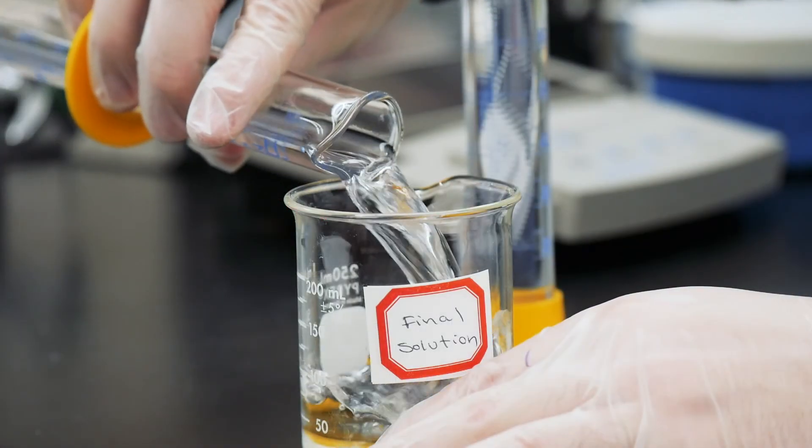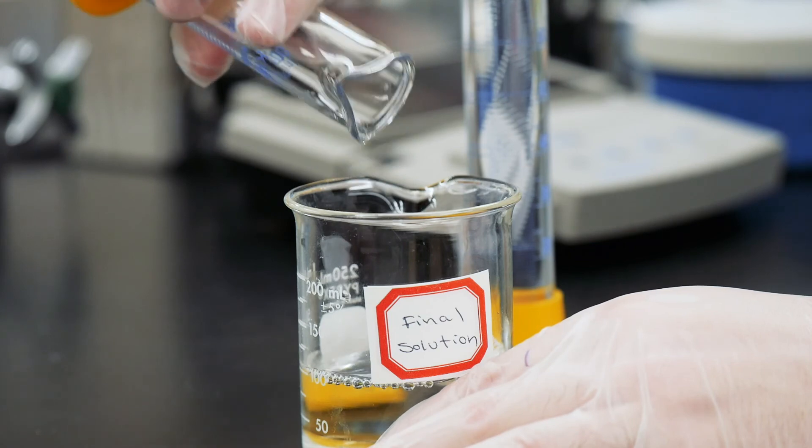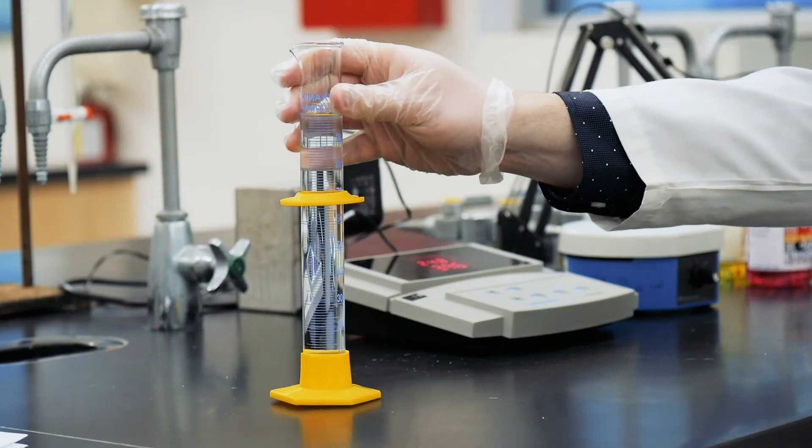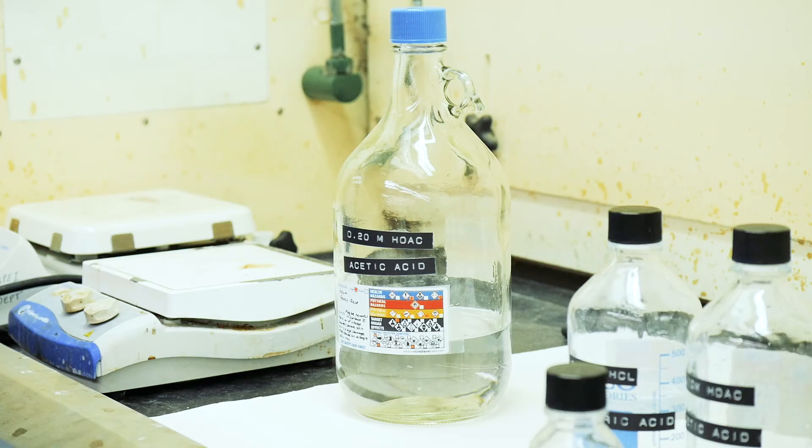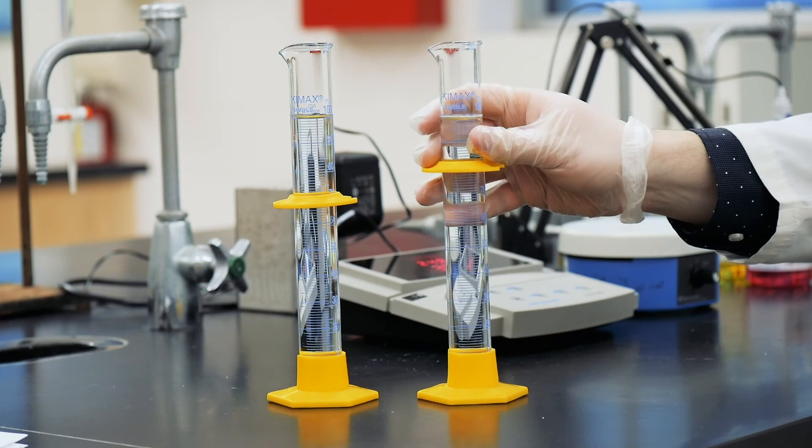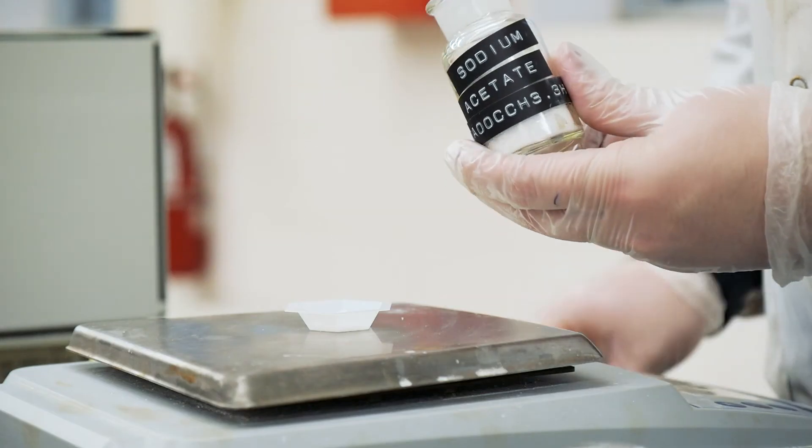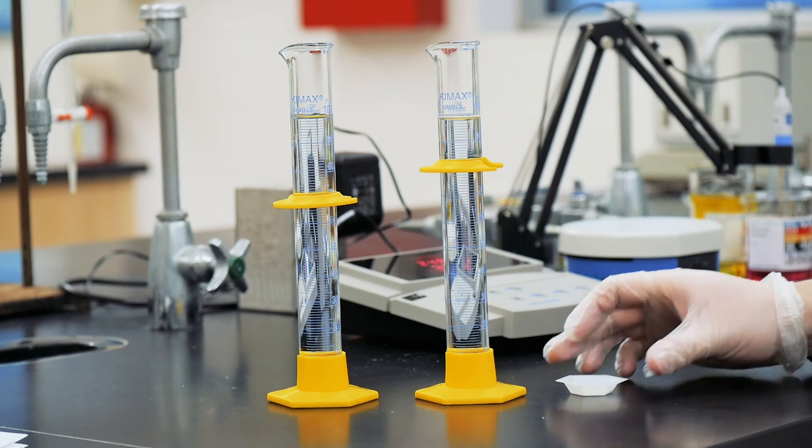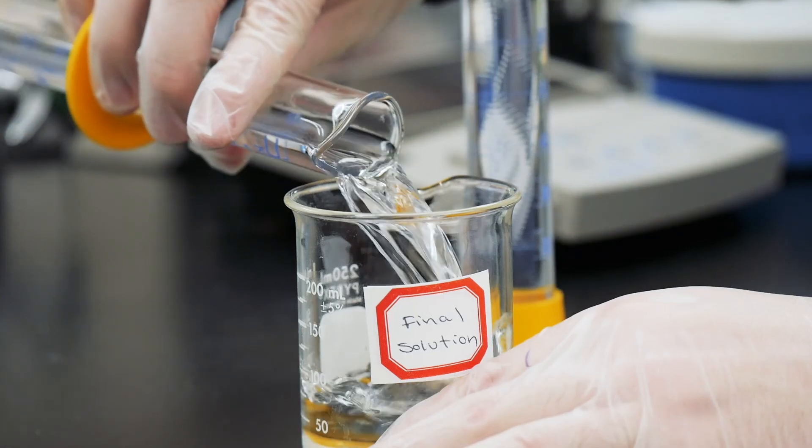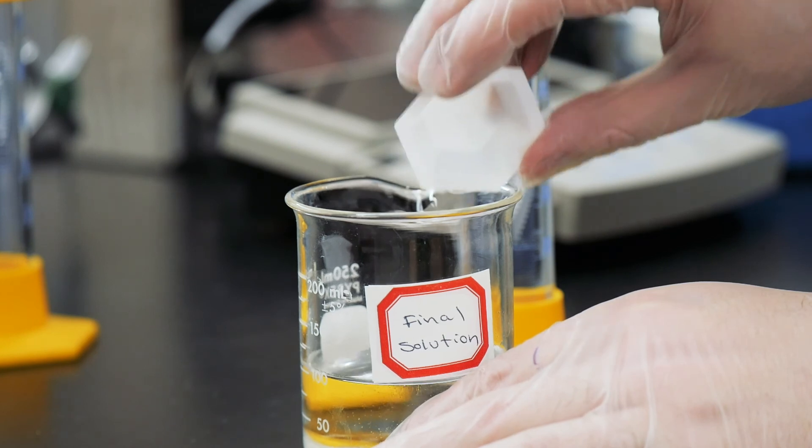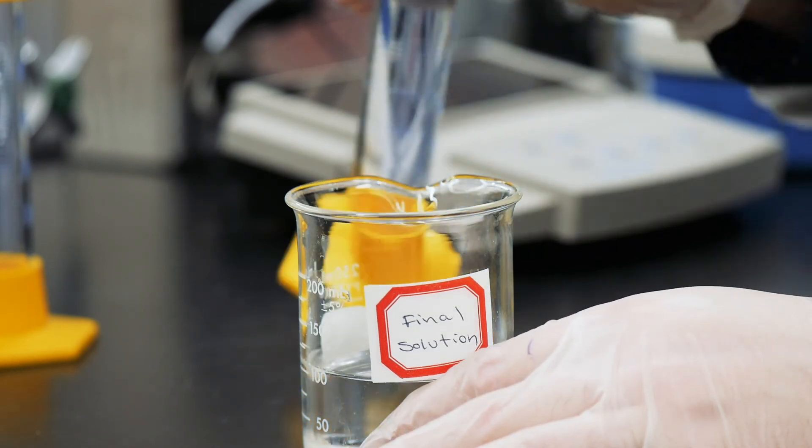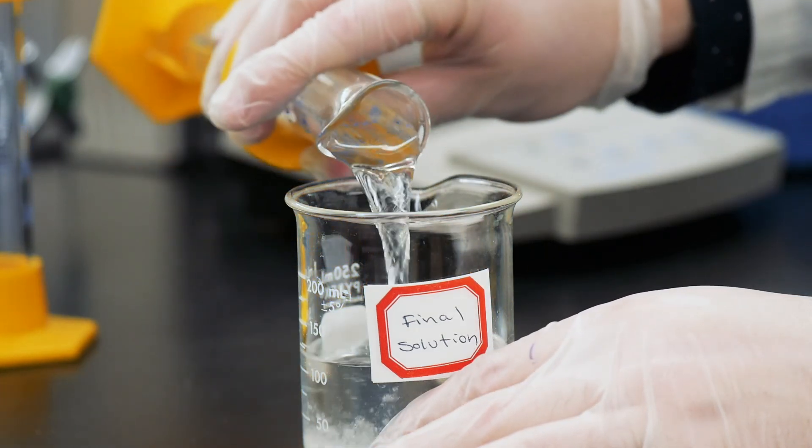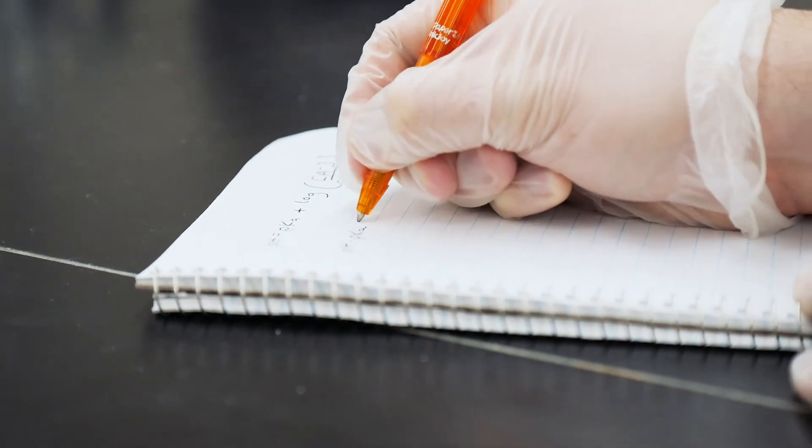The final exercise today is to make your own buffer to a specifically chosen pH. For this, you'll use the pH given in your pre-lab exercise. You'll use 100 ml of the 0.2 molar acetic acid solution, 100 ml of deionized water, and a calculated quantity of sodium acetate trihydrate, which is the conjugate base of the acetic acid. Using the math we reviewed earlier, you'll need to figure out exactly how much of the sodium acetate trihydrate to use in order to make the buffer solution to the correct pH. Don't forget to show your calculations.